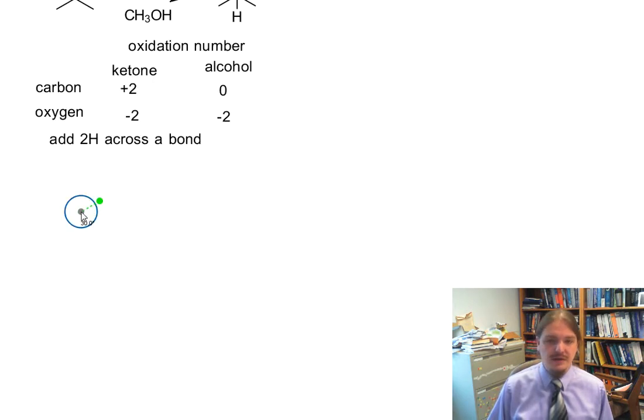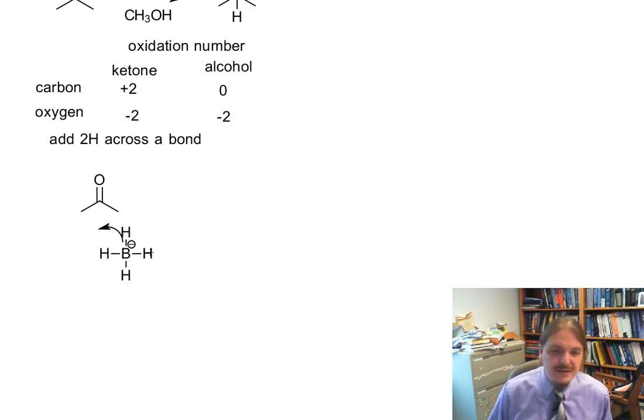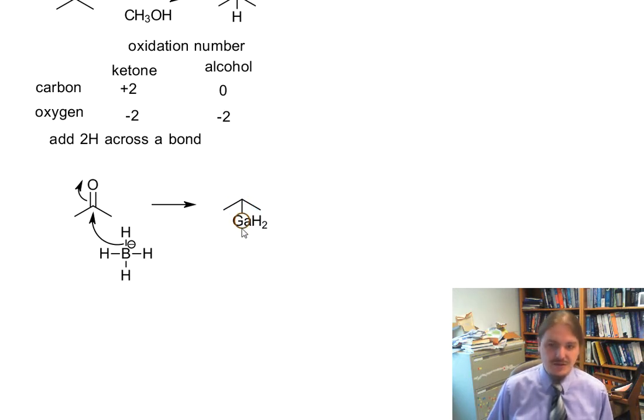I want to take a moment and just reiterate the mechanism of this reaction. Even though I showed that mechanism in the previous video, I want to make an important point. It's just good to have a second look at this mechanism. So again, we have a nucleophilic attack from one of the boron hydrogen bonds that delivers a hydride equivalent that generates our alkoxide anion.